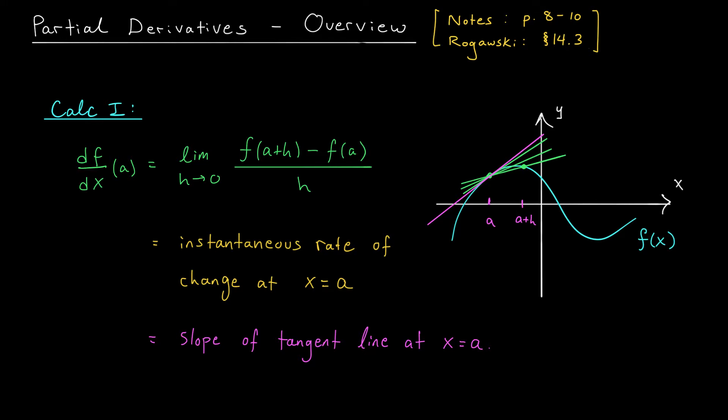Now, when you first learn this stuff, maybe you thought: who cares? Why would I ever want to know the slope of this tangent line? But now you're older and wiser and more experienced, and you know that the slope of the tangent line tells you many important things about your function. The tangent line gives you a linear approximation to your function, allowing you to approximate nearby points using a straight line. Derivatives can also tell us where our function is increasing or decreasing and help us to locate local maxes and mins. It's a really useful object, so we want to make use of these same ideas in Calc 3.